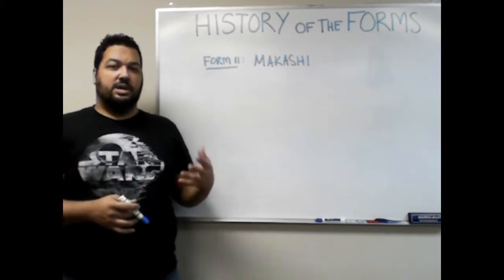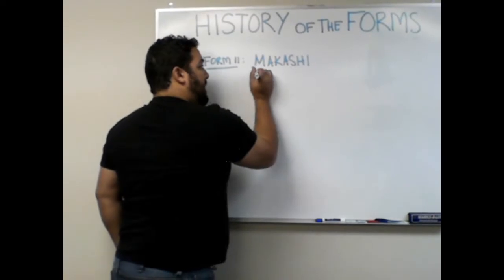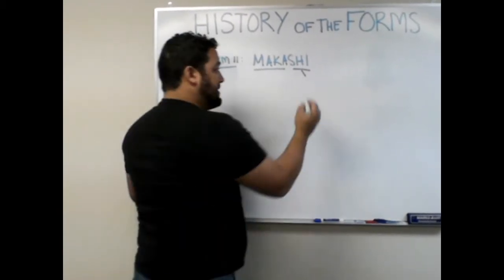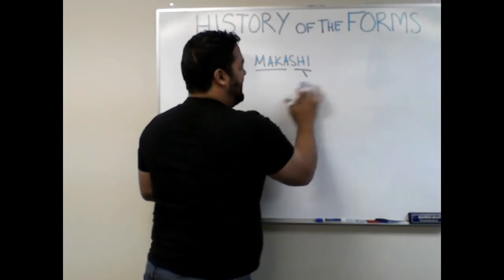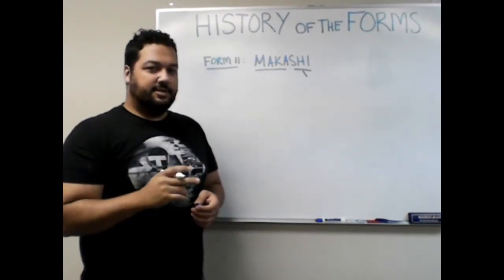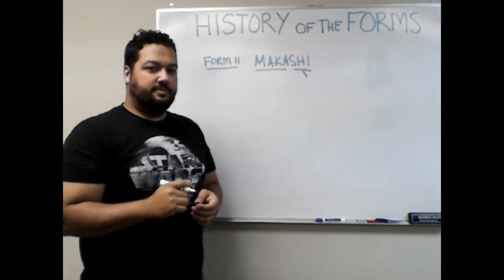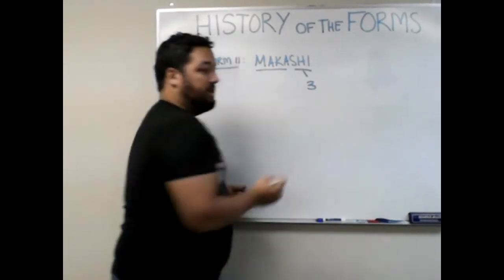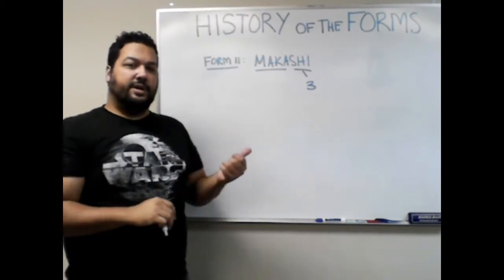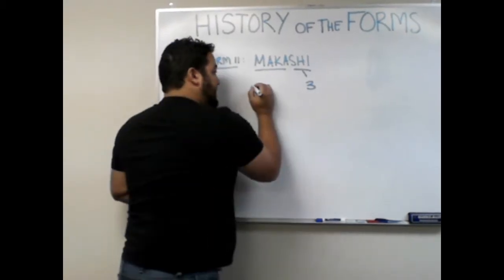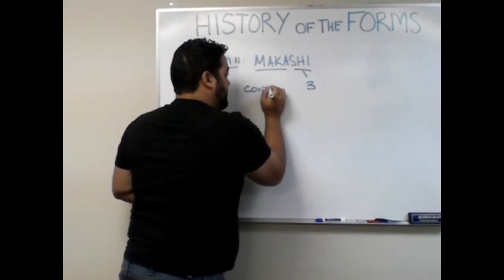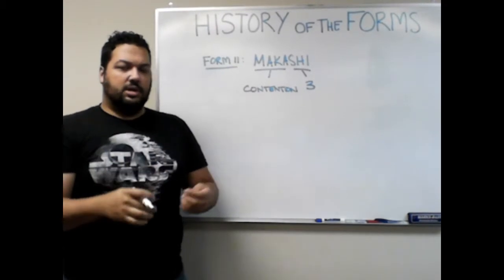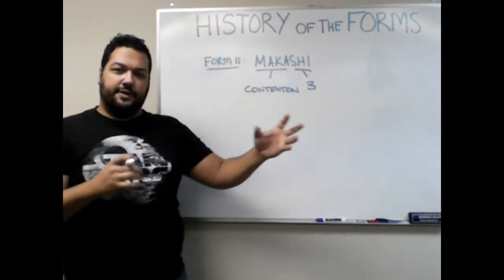In our forms, Makashi is made up of two words: maka and shi. Shi, if you watched our shi cho video, as you know, means three — literally translates to three. So, the three what? The three maka. Maka translates to contention, or struggle. So Makashi is literally the study of the three contentions.